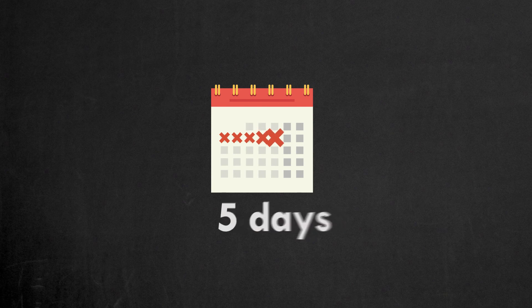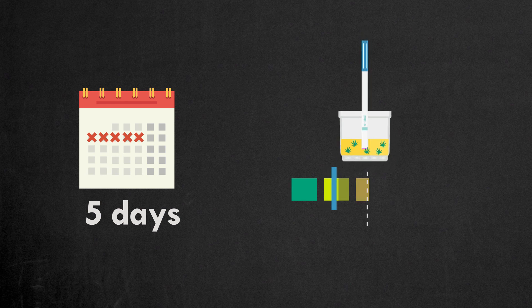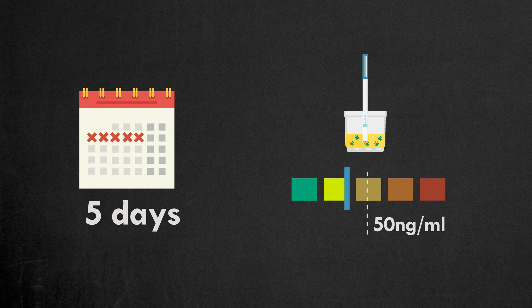As you can see, according to this case study, it will take at least 5 days for the concentration of THC COOH in the urine to drop below the detectable level. As a reminder, this is an example of the worst scenario.